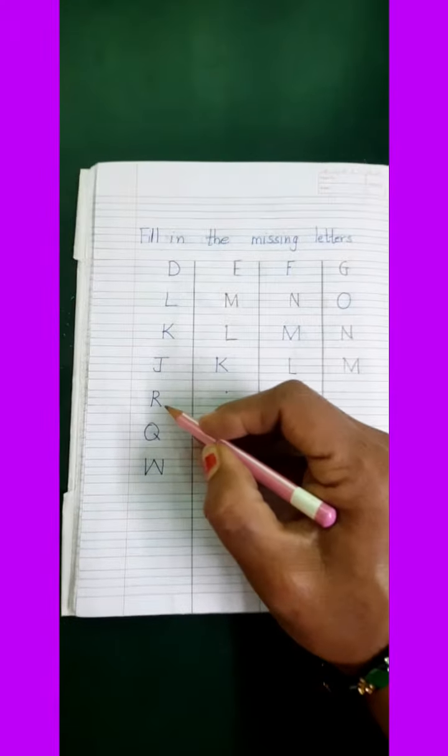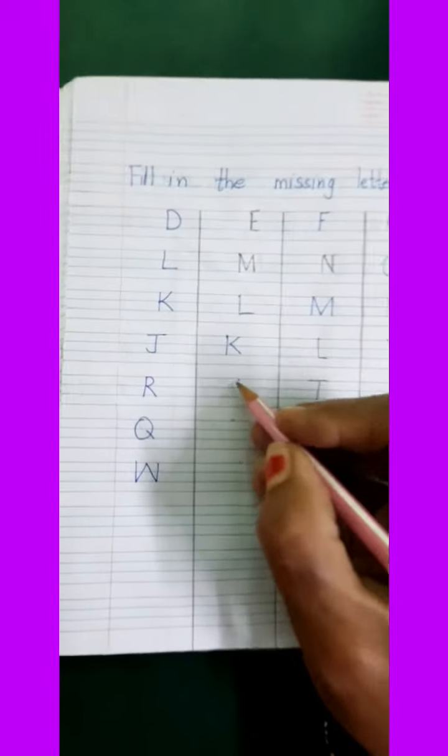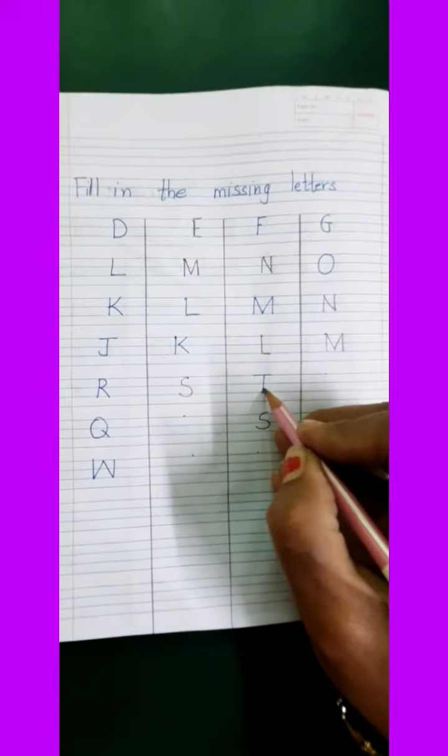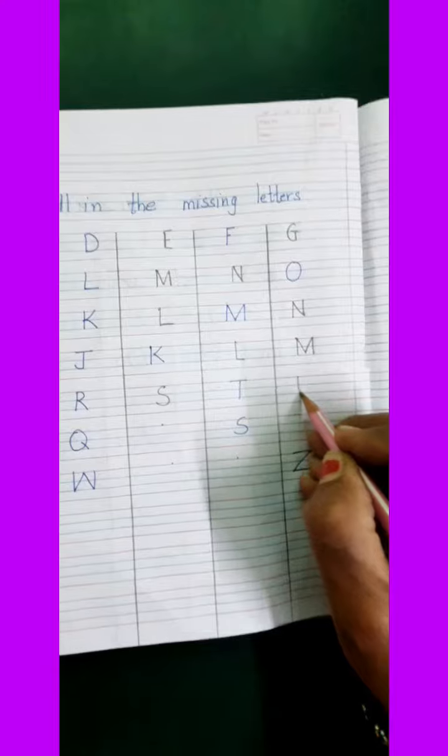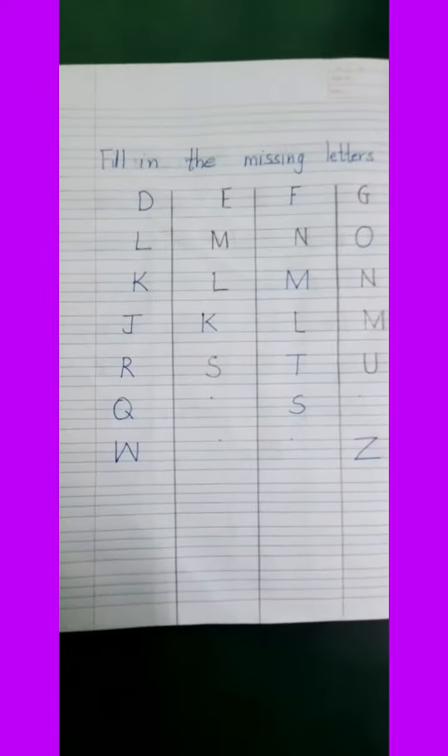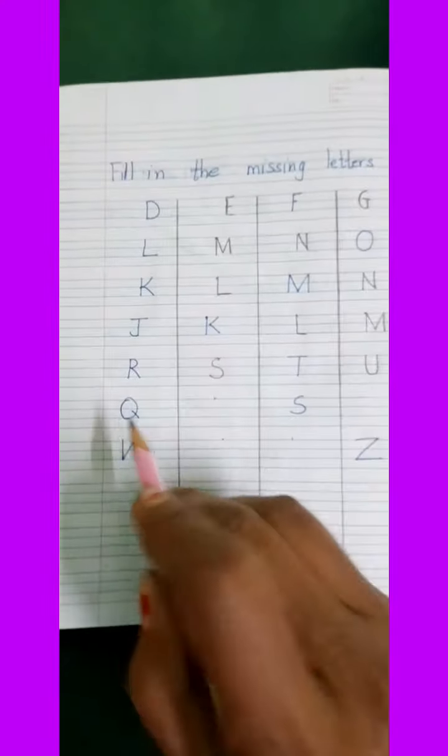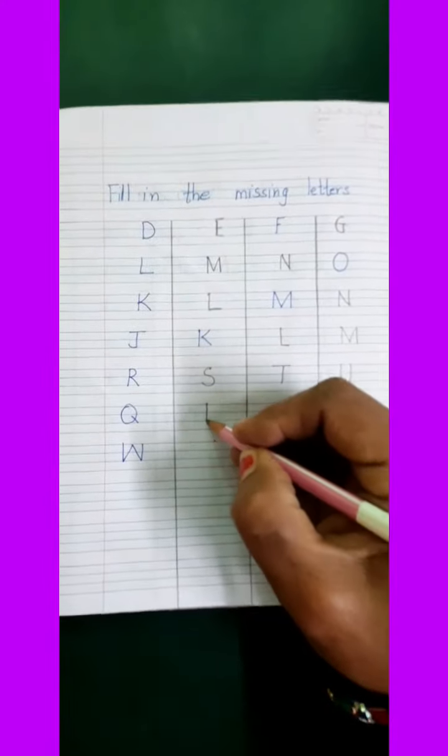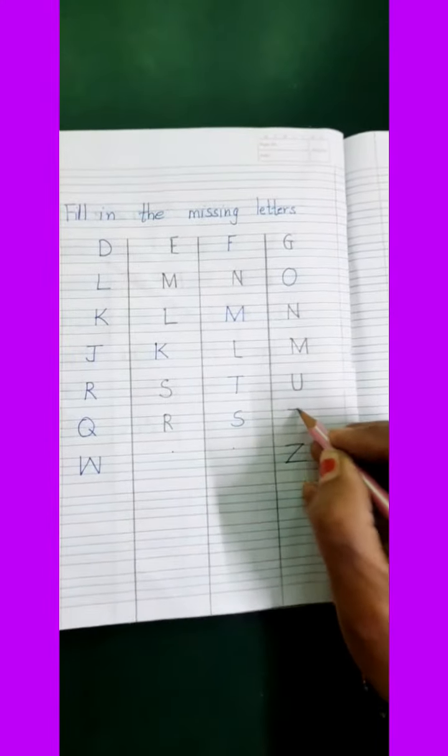Now what letter is this children? R. What comes after R? S. After S? T. After T children, U. Now children, what letter is this? Q. After Q? R. S. After S? T.